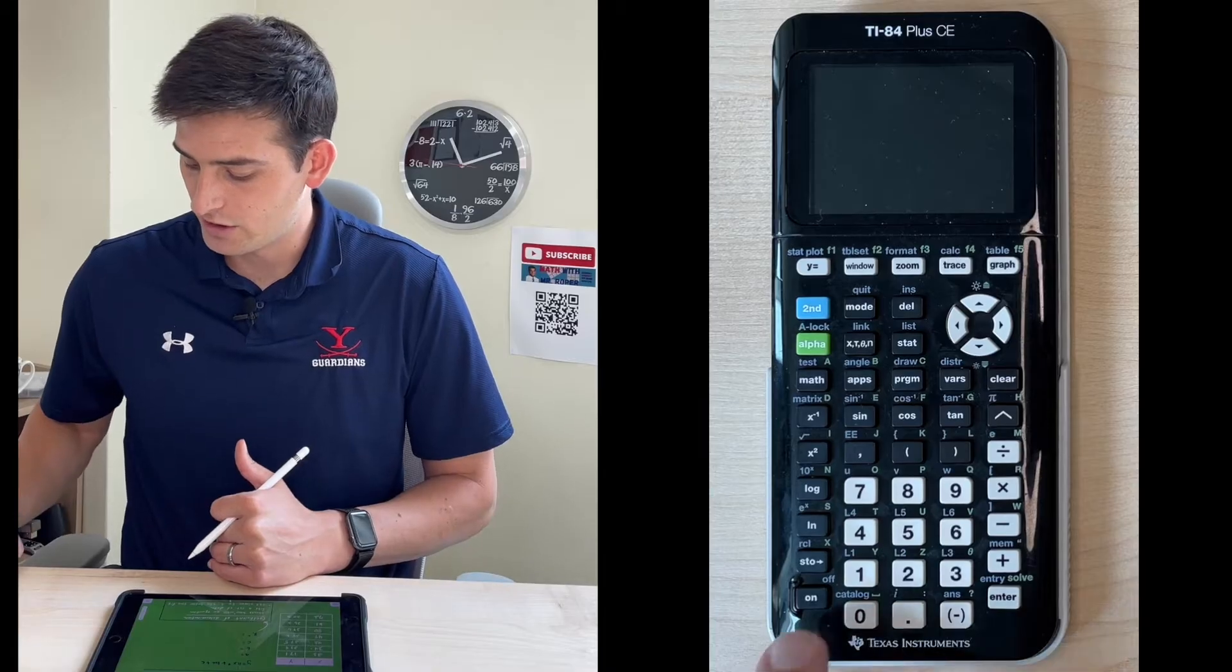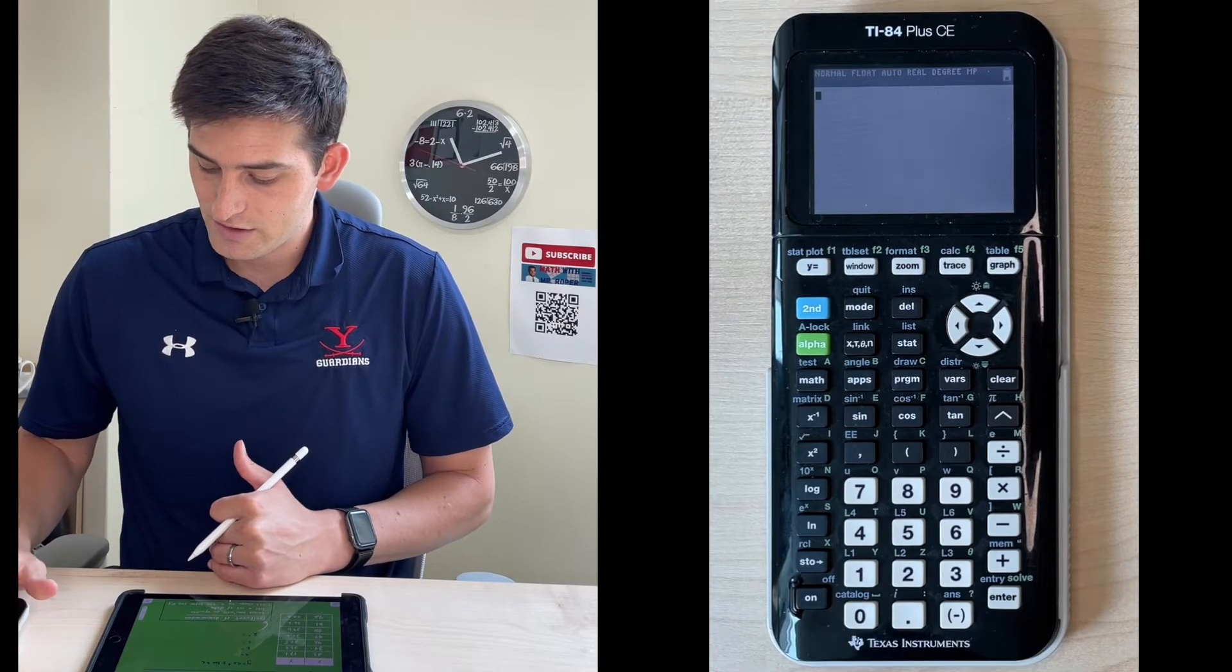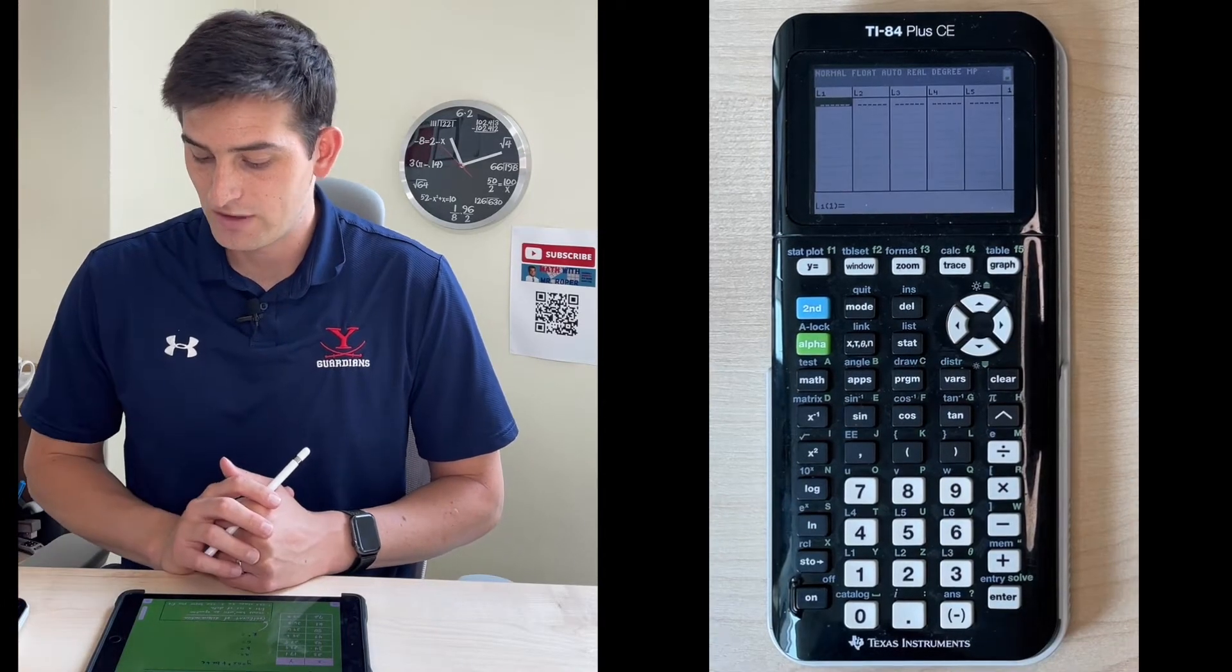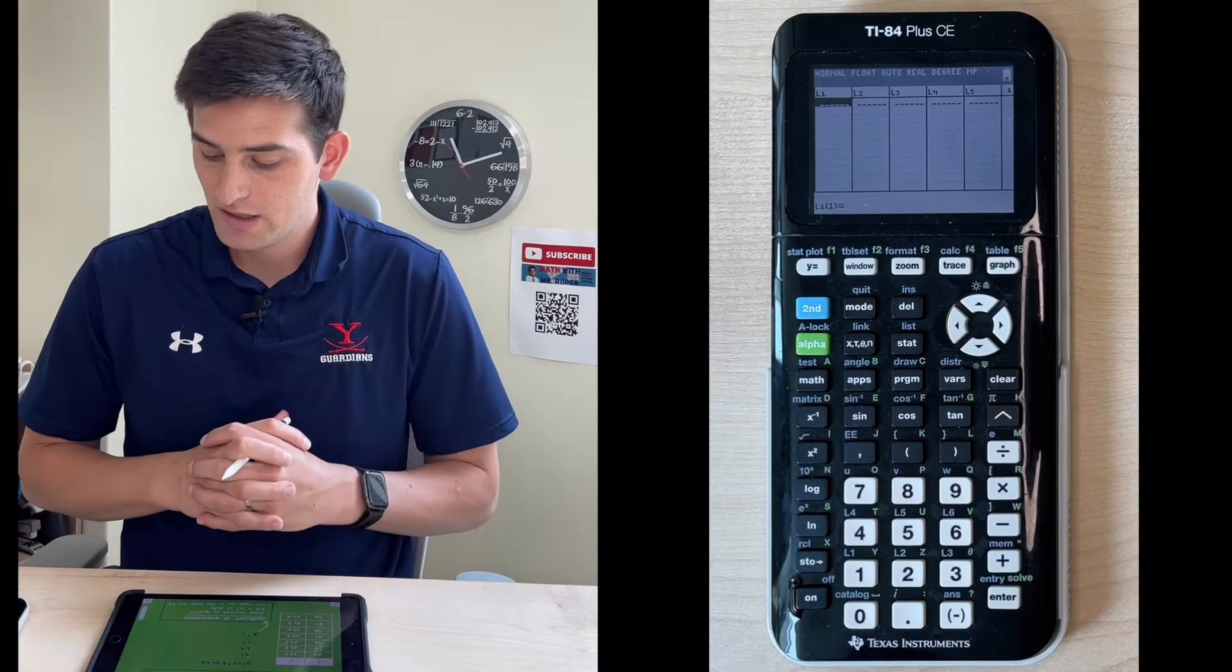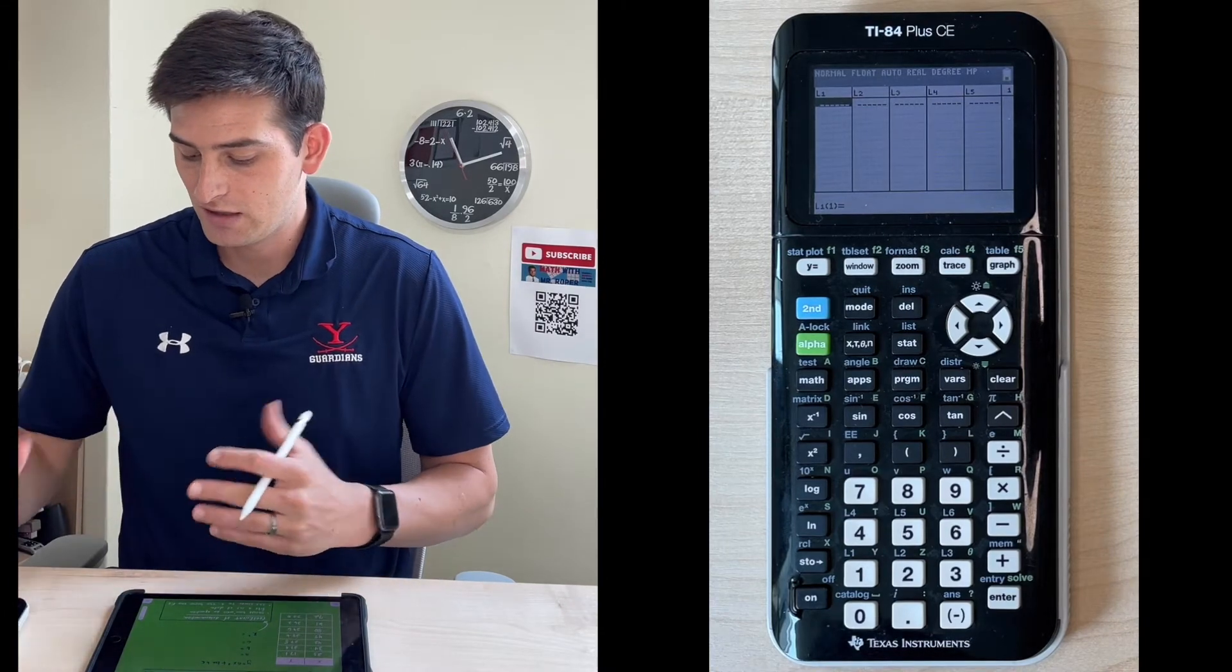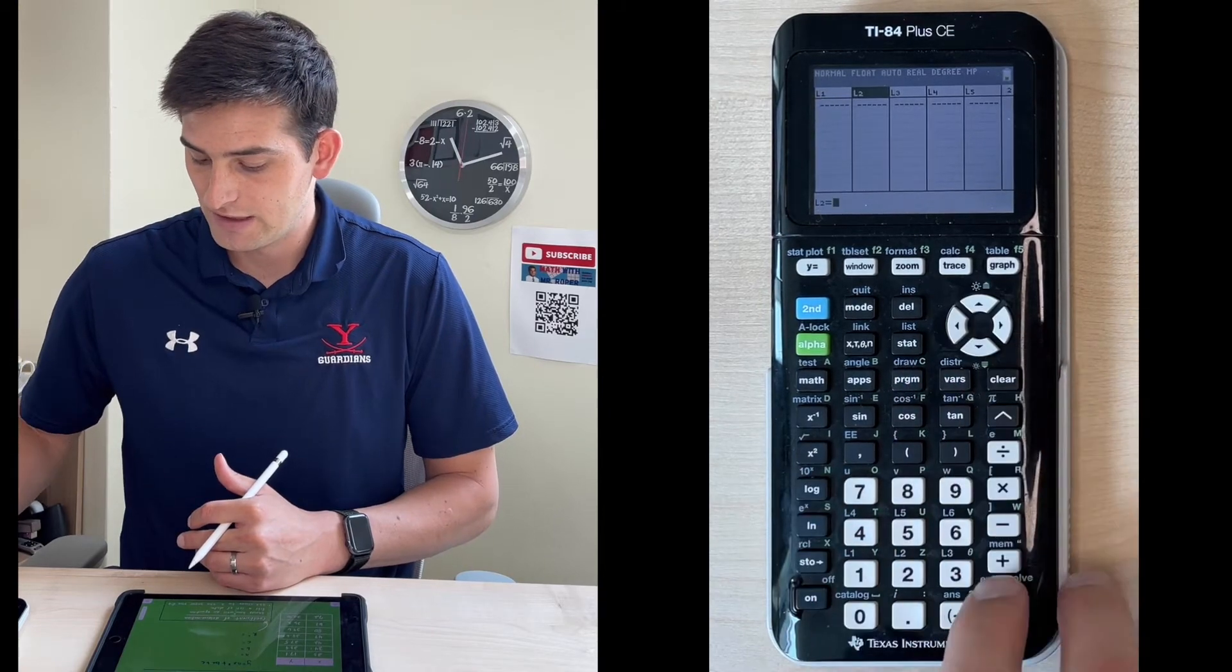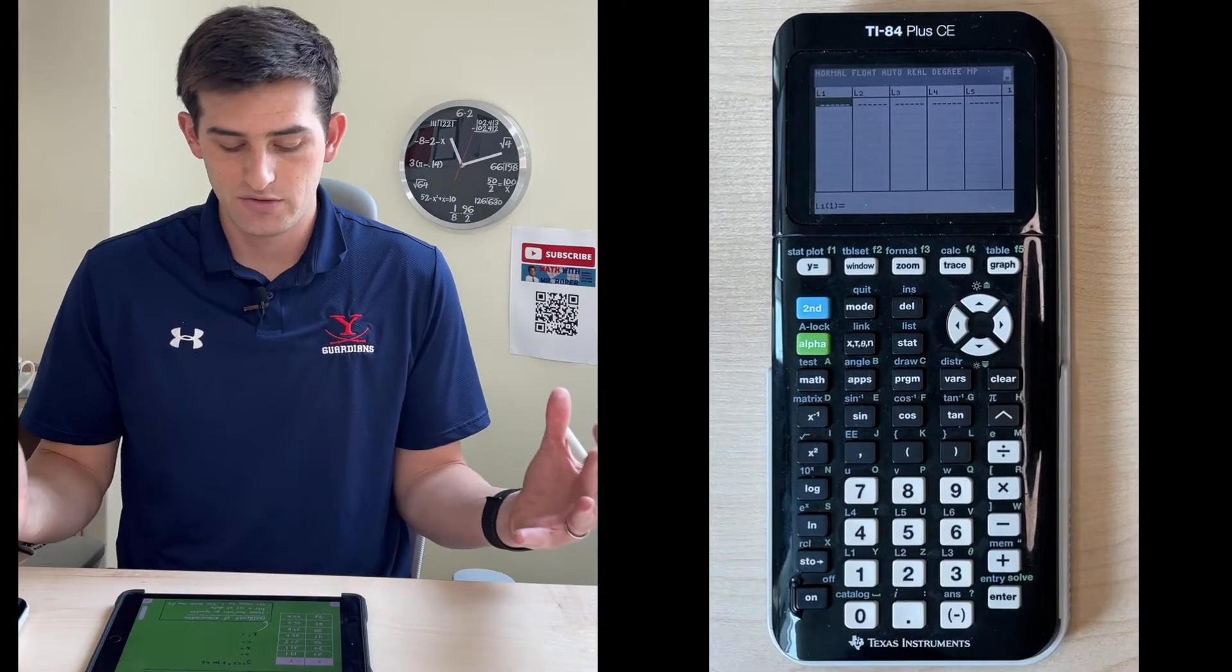We're going to go to our calculator, turn it on, and go into stat. Once we go to stat, we're going to hit edit and we're now at our L1 L2 screen. Just make sure these are clear. If they're not, you can go up to L1, hit clear and enter, then go to L2, clear and enter, and that should take away any values you have there.